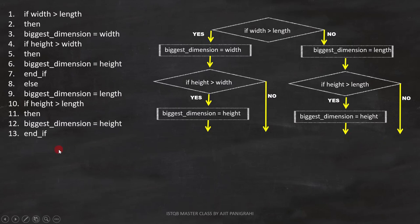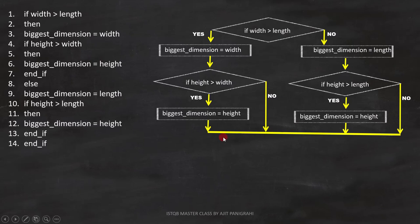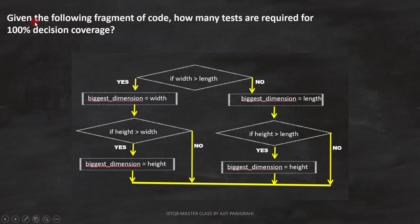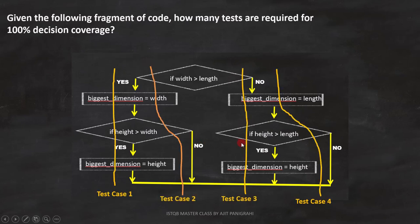Now let's focus on the last line, which is end if. This end if is for the first condition, so this is the place where the first condition ends. Now let's move to the flowchart — this is how we draw the complete flowchart. Using this flowchart, we have to find out how many tests are required for 100% decision coverage. To cover 100% decision coverage, we have to cover both paths. These are the four test cases we need to cover all the branches. Therefore, the answer is 4 for this question.